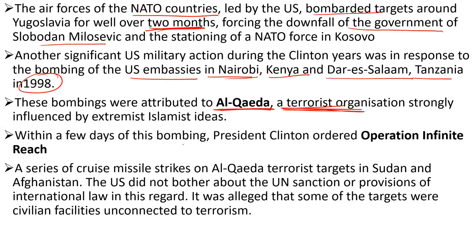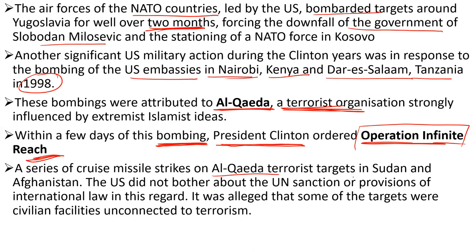Within a few days of the bombings, President Clinton launched Operation Infinite Reach. This is very important from the examination point of view. Operation Infinite Reach was a series of cruise missile strikes against Al-Qaeda terrorist bases in Sudan and Afghanistan. The US did not bother about UN sanctions — it didn't think about getting UN Security Council permission before attacking.